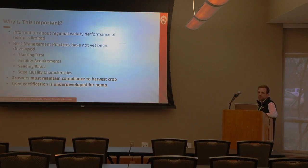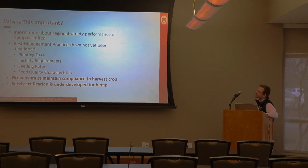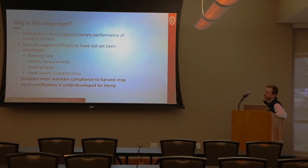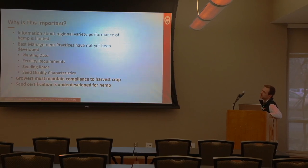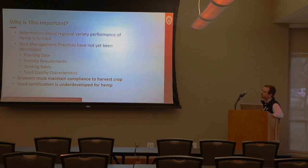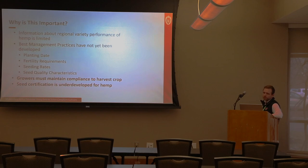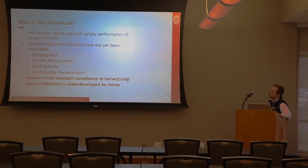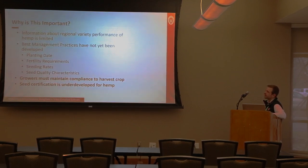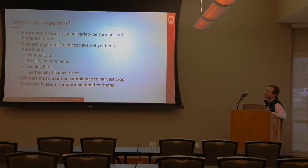Hemp is a new crop and information on regional variety performance is still very limited. Best management practices are still being developed — planting timing, fertility requirements, seeding rates, and seed quality characteristics. Critically, regardless of hemp type, growers are required to grow a compliant crop in order to harvest it. If it's not compliant it must be destroyed at their own cost. Seed certification is underdeveloped, making selecting compliant high-performing varieties a challenge — and this is where the database comes in.